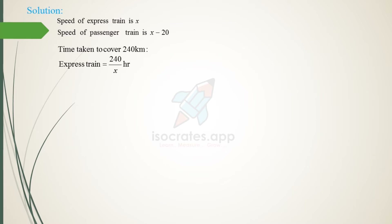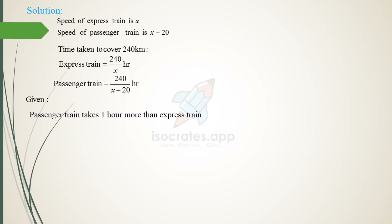Time equals distance divided by speed. So the time taken by the express train is 240 divided by x, and the time taken by the passenger train is 240 divided by x minus 20. Since the passenger train takes one hour more than the express train, we can set up an equation.